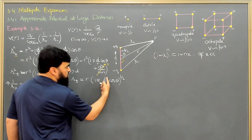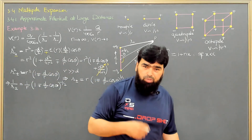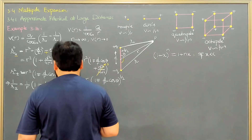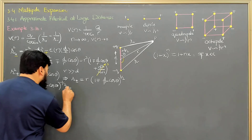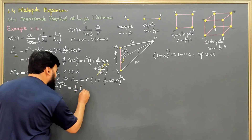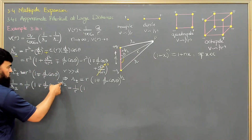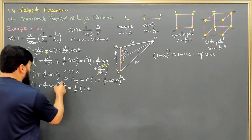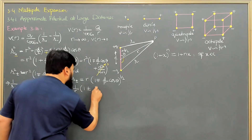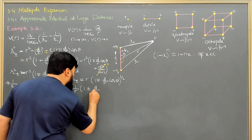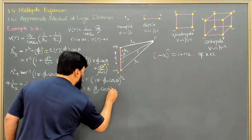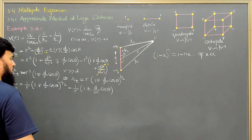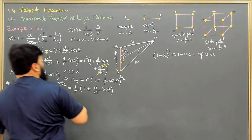Since r is greater than d and cosθ is less than 1, the product (d/r)cosθ is small, so the approximation is valid. I can now use this to write 1/r± ≈ (1/r)(1 ∓ d/2r cosθ). Now I am in a position to calculate 1/r+ minus 1/r−.